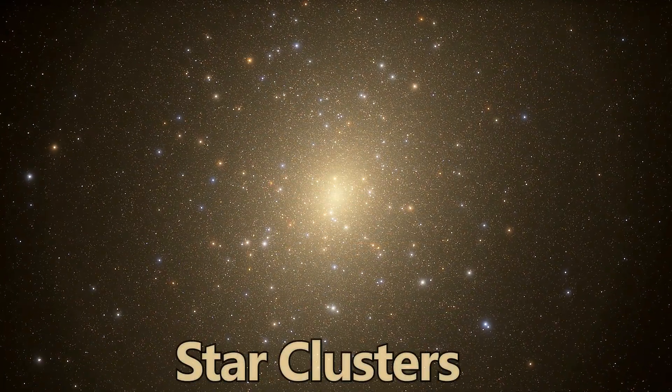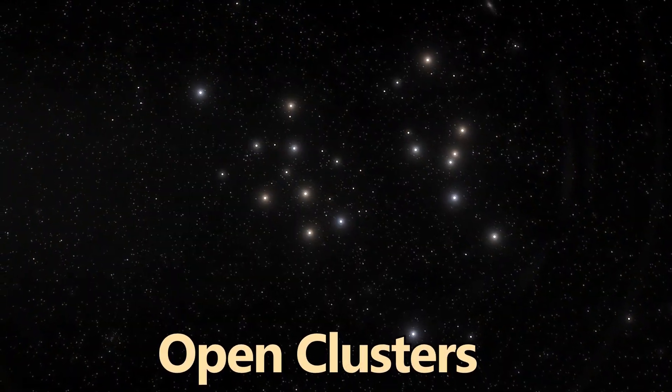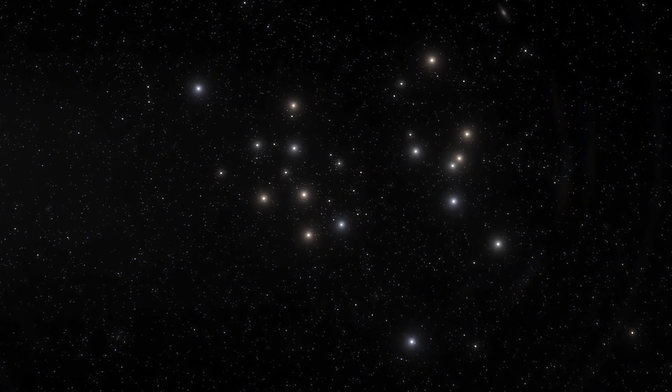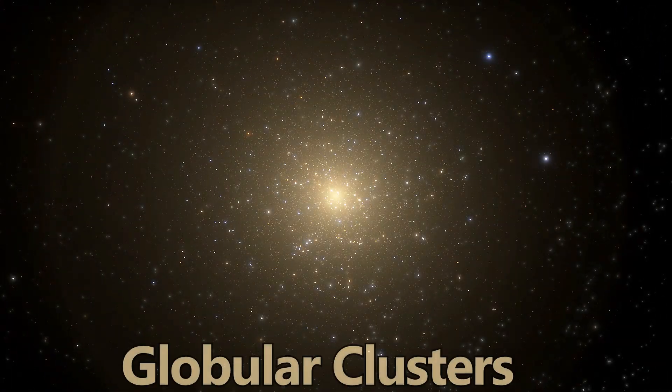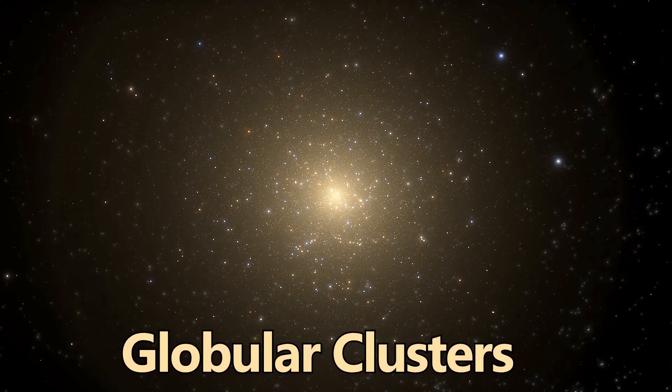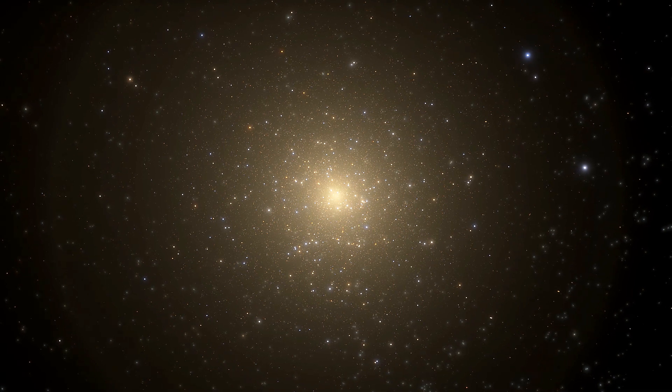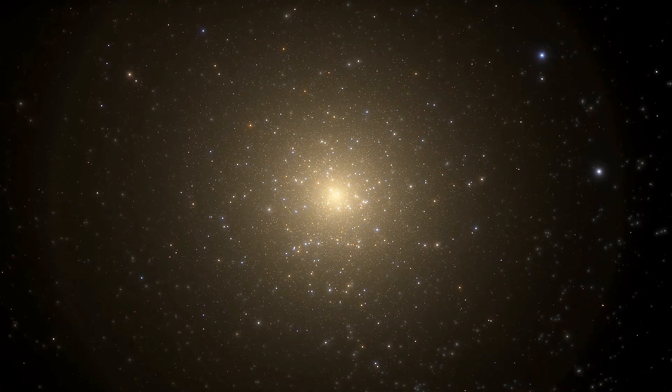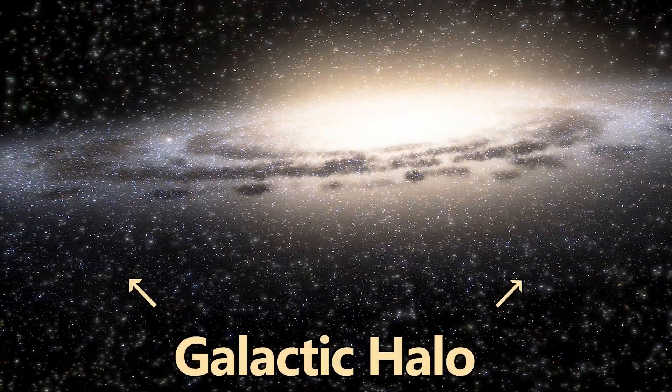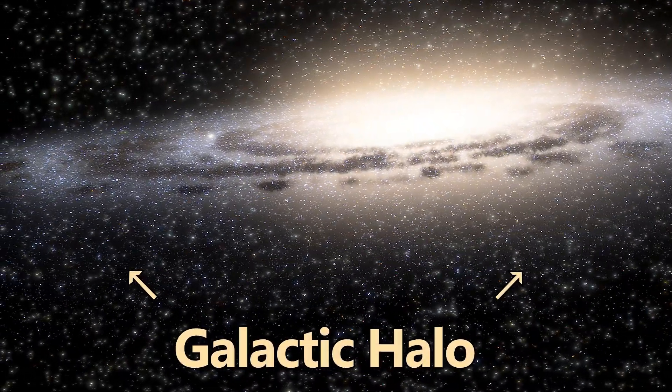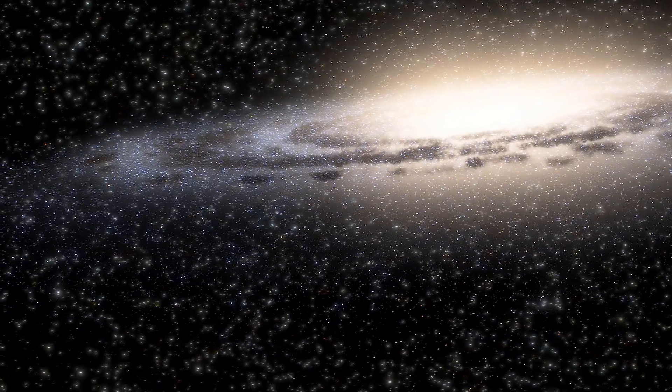The Milky Way is adorned with stunning star clusters. Open clusters are groups of young stars born from the same molecular cloud and are loosely bound by gravity. Globular clusters, dense spherical collections of older stars, are typically found in the outer regions, or halo, of the Milky Way. The galactic halo is a spherical region containing older stars and globular clusters that extends far beyond the visible part of the Milky Way.